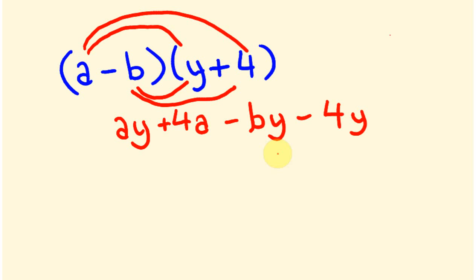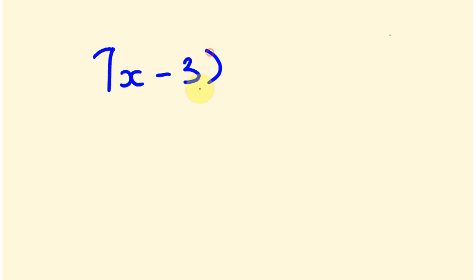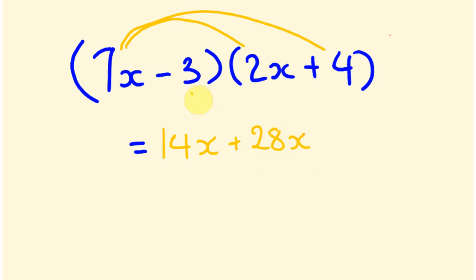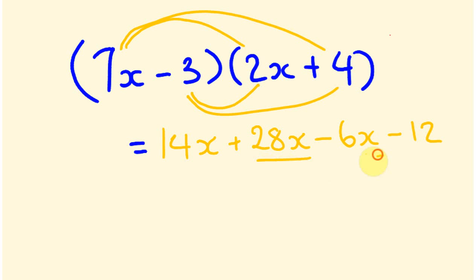Let's try a harder example: (7x minus 3)(2x plus 4). First: 7x times 2x is 14x squared, and 7x times 4 is positive 28x. Then: minus 3 times 2x is minus 6x, and minus 3 times 4 is minus 12. Collecting the like terms 28x and minus 6x gives positive 22x, so the answer is 14x squared plus 22x minus 12.